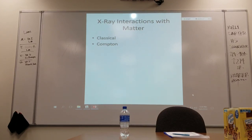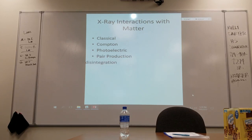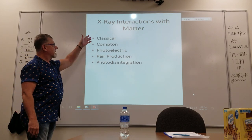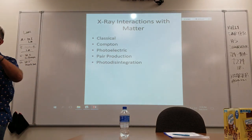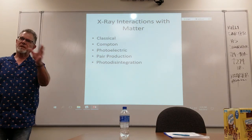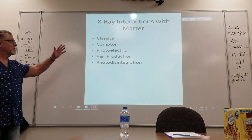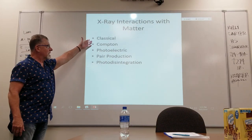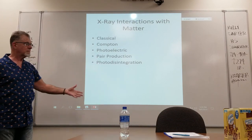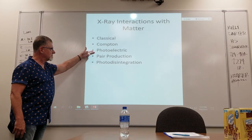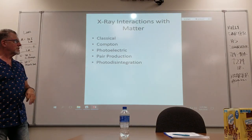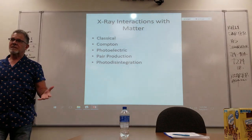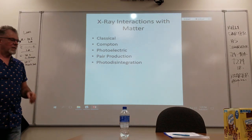Can anyone describe classical? This is the interaction of X-rays, not the interaction of electrons. We've already done the tubes, this is what comes out of the tubes. So you have X-rays interacting with matter. We've got classical, we've got Compton, photoelectric, pair production, and photodisintegration. Now two of these we don't use, I'm going to talk about those first.